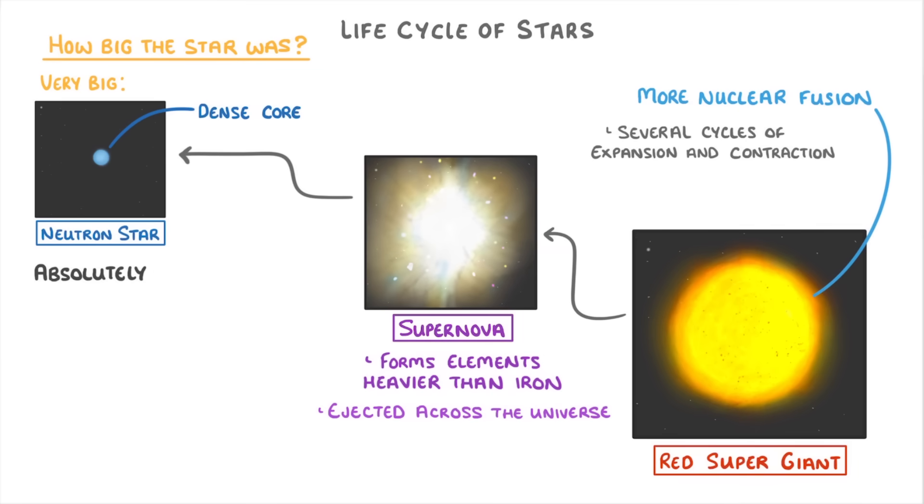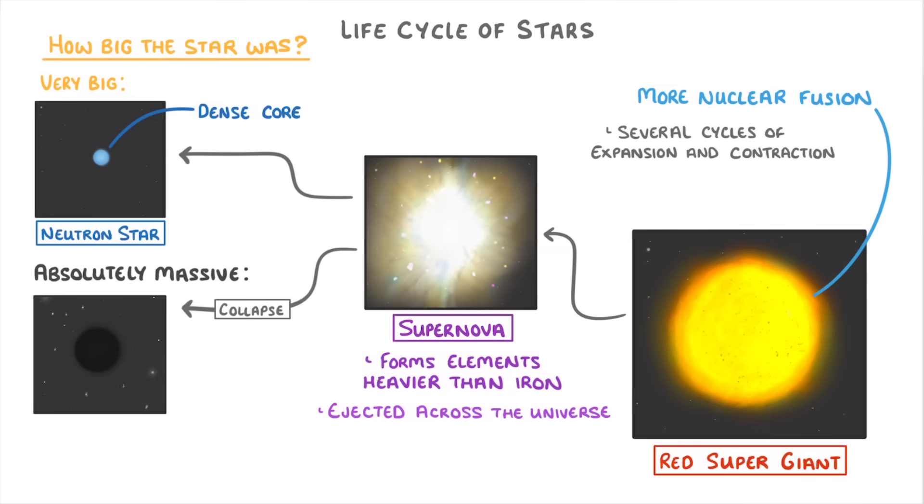However, if the star was absolutely massive, then it might collapse in on itself and become a black hole. The reason we call them black holes is because they're so dense that their gravity is able to pull in any light that passes nearby, which means that they literally appear as empty spaces or tiny holes in the universe where no light is ever emitted.